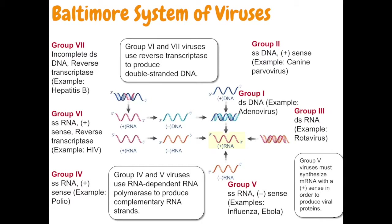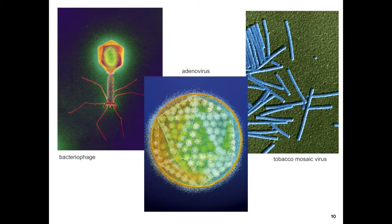Group six is single-stranded RNA, like HIV. Group seven is double-stranded DNA, like hepatitis B. Instead of calling different types of viruses species, we call them pseudospecies. Three major virus types are shown here: the bacteriophage on the left with legs and a capsid that contains DNA or RNA and injects it into host cells; the circular adenovirus; and the spiral-shaped tobacco mosaic virus on the right.